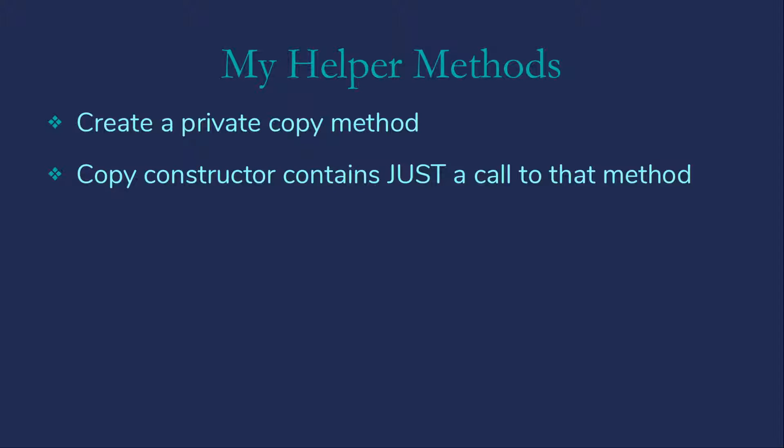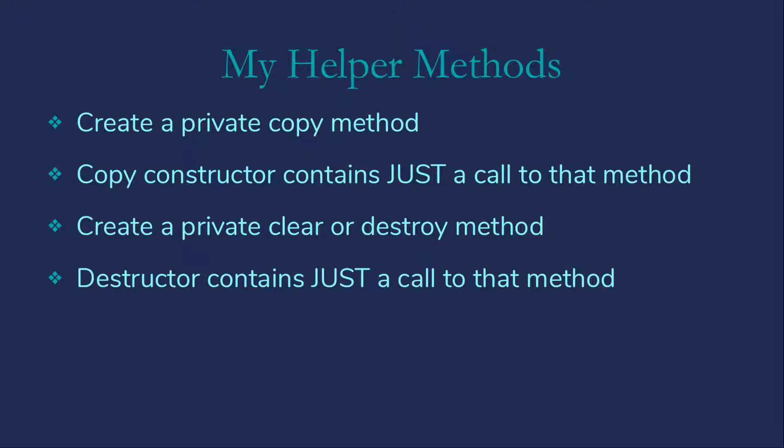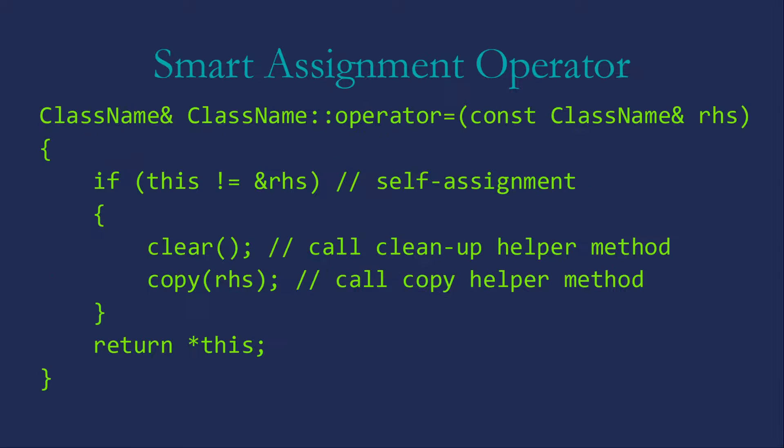So what do I mean by that? We will create a private copy method, which will contain exactly the code we need in the copy constructor. Then the copy constructor will consist of just a call to that method. We will also create a private method that we might call clear or destroy, which will contain exactly the code we need in the destructor. And our destructor will consist of just a call to that method. Once we have that, we can easily construct our assignment operator.